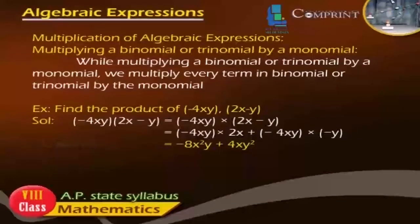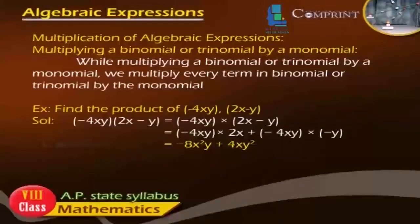Multiplying a binomial or trinomial by a monomial: While multiplying a binomial or trinomial by a monomial, we multiply every term in the binomial or trinomial by the monomial. Example: Find the product of minus 4xy and (2x minus y). Solution: minus 4xy × (2x minus y) equals minus 4xy × 2x plus minus 4xy × minus y, which equals minus 8x²y plus 4xy².